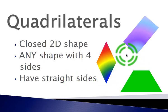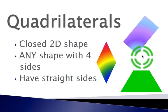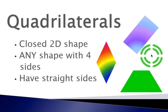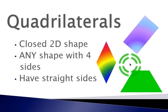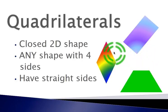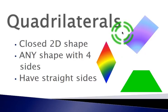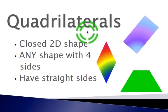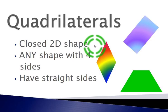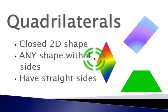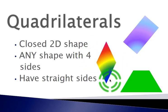Looking at these three shapes here, you can tell that they are very different. But if you look at all of them, they do have four sides, and all of these sides are straight. So once again, quadrilaterals are any closed two-dimensional shape with four sides, and these four sides must be straight.